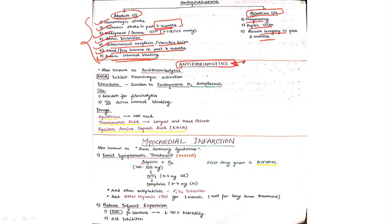Now the next group of drugs: antifibrinolytics, also known as antithrombolytics. Mechanism of action: they inhibit plasminogen activation because they are antifibrinolytics.